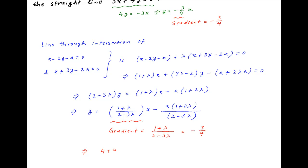we get 4 plus 4 lambda is equal to minus 6 plus 9 lambda, which implies that 5 lambda is equal to 10, which implies that lambda is equal to 2.